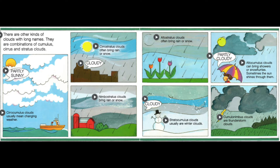There are other kinds of clouds with long names. They are combinations of cumulus, cirrus, and stratus clouds. Cirrocumulus clouds usually mean changing weather. Cirrostratus clouds often bring rain or snow.